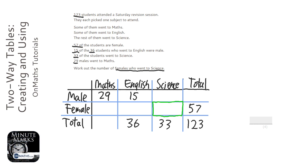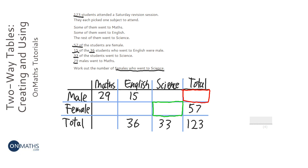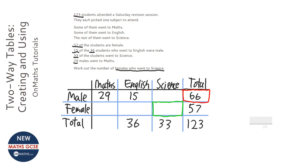What you can do with this question is just try and fill out the bits that you can. If there's 123 students in total and 57 of them are female, then 66 of them will be male, because these two have to add up to 123. Then if there's 66 males in total, and 29 of them went to maths and 15 went to English, that leaves 22 who went to science. And if there's 22 males who went to science and there's 33 people in total who went to science, then there's going to be 11 females who went to science.